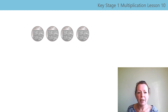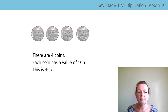Your turn again. What is the value of this set of coins? Remember to pause the video while you work it out. That's right, it's 40p. Let's say the stem sentences together: there are four coins, each coin has a value of ten-p, this is 40p.